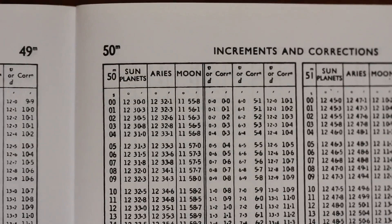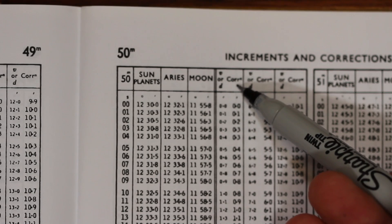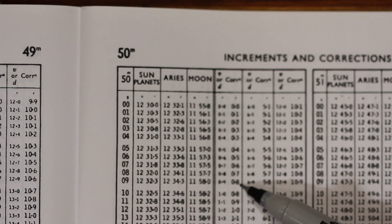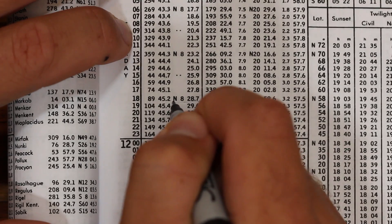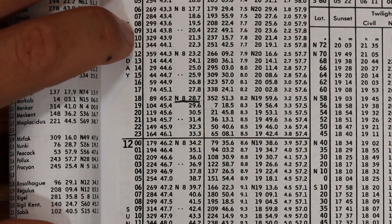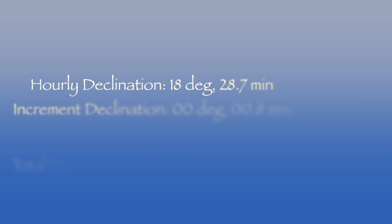So if we want to account for those 50 minutes that are still out there, we use the back of the book — the increments and corrections pages — flip to 50 minutes, and then look under the V or D correction tables for 0.9 and we come up with our corrected figure. In this case it's 0.8. That 0.8 needs to be applied to the hourly figure to determine the total declination. Since declination is increasing, it's added in this case. So total declination is the hourly declination plus the increment.